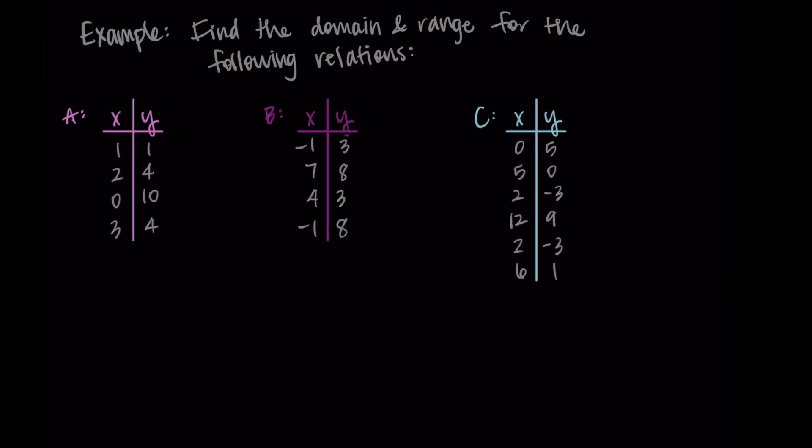All right, so let's try this out on an example. Let's find the domain and range for the following relations. So I'm listing relations A, B and C here. So these are the same relations I used in the video where we introduced relations and functions. So just as a note, if you watch that video, you'll know that relations A and C are functions, where relation B is not. But even though this is true, we're going to find the domain and range for all of these.